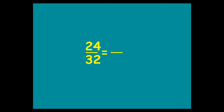For this one, what goes into 24 and 32? Again, you could have multiple answers — you could have 2, you could have 4, you could have 8. The biggest of these choices is best, because that will get you to your answer straight away. Divide top and bottom by 8, you end up with 3 on the top and 4 on the bottom. And it's a lot easier to understand when somebody talks about 3 quarters than it is when somebody talks about 24 over 32.